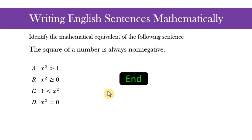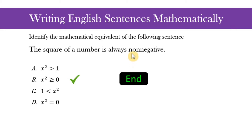Time's up. The correct answer is letter B. If we assign the variable to be x, then x squared is greater than or equal to zero. The term non-negative means that the number is either positive or zero — zero is still non-negative; it refers to all numbers that are not negative. Letter A is incorrect because it only says the square of a number is greater than one, referring only to positive numbers.